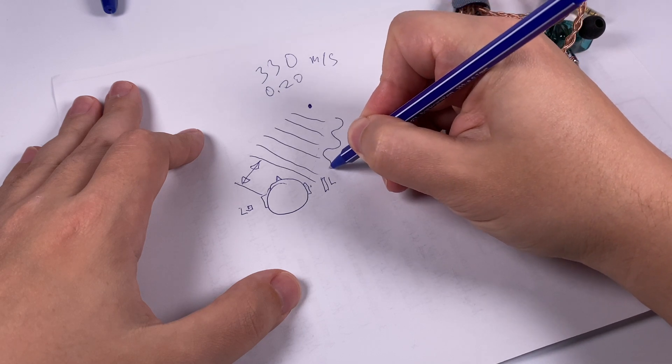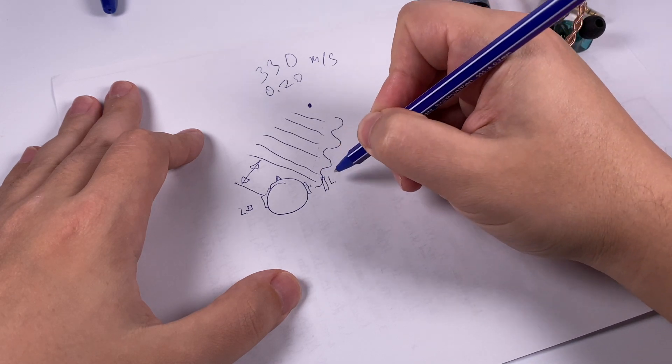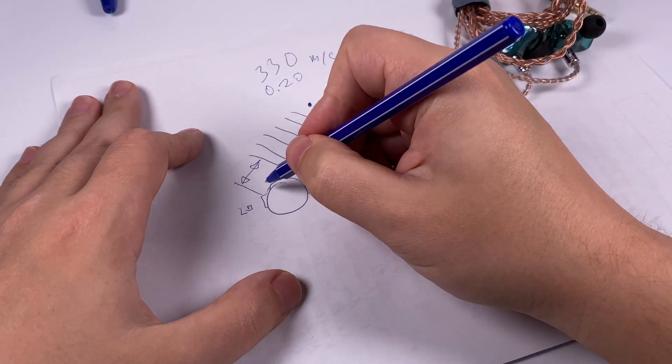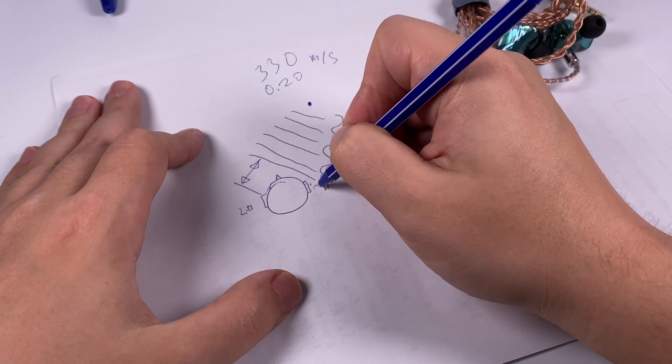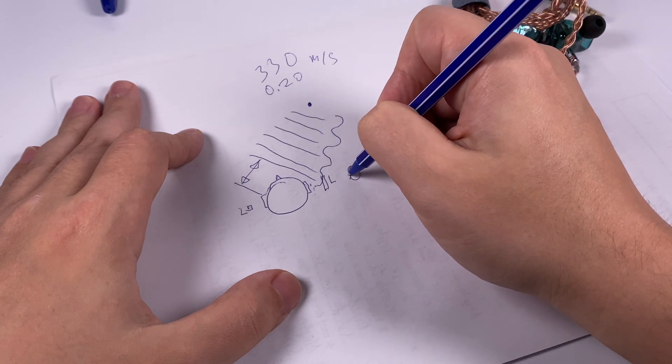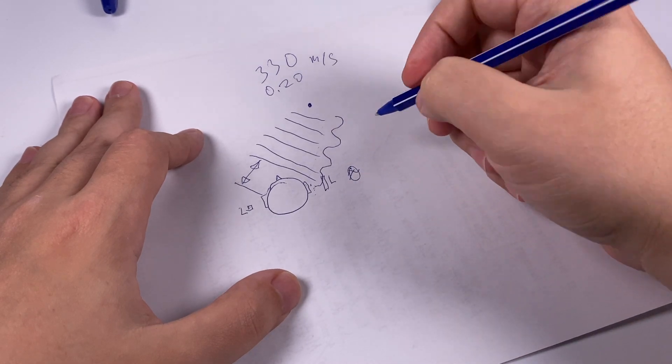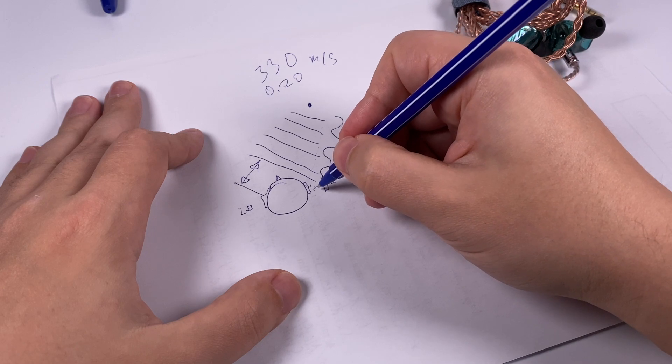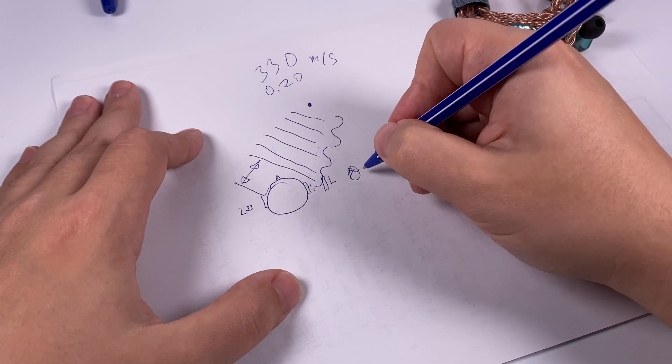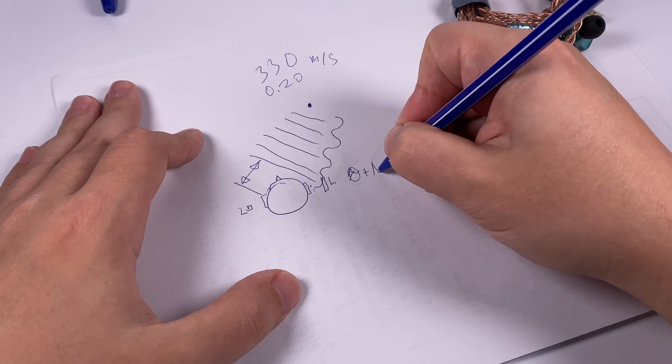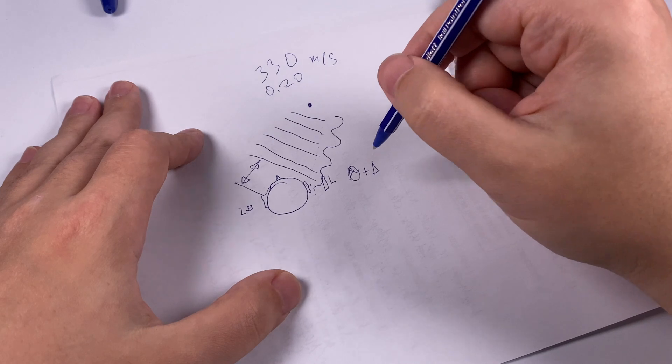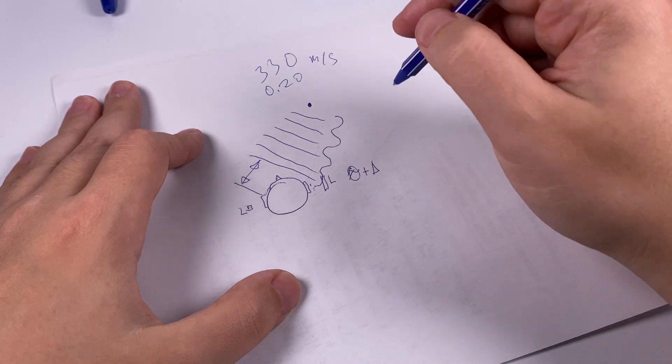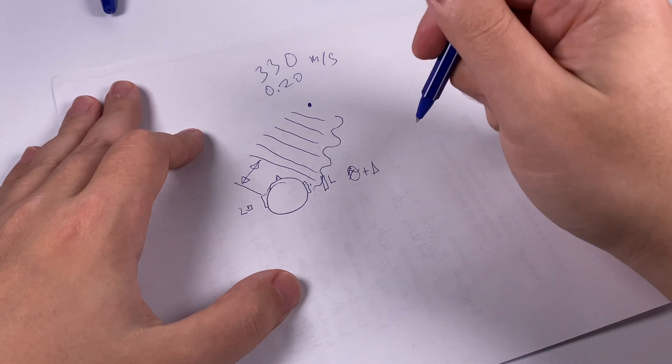The third aspect is the difference in phase. When sound goes, it's kind of a sine wave. When it gets to the left ear, it will be some phase theta. When it gets to the right ear, it will be theta, and when it gets to the left ear, there will be an additional phase difference delta.